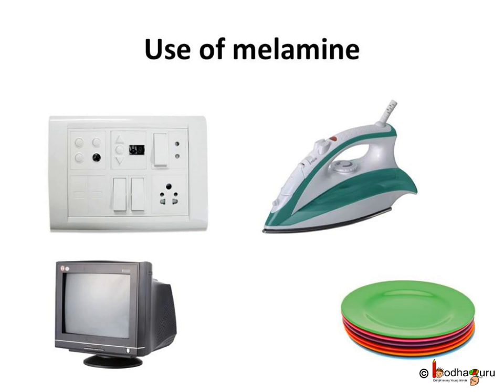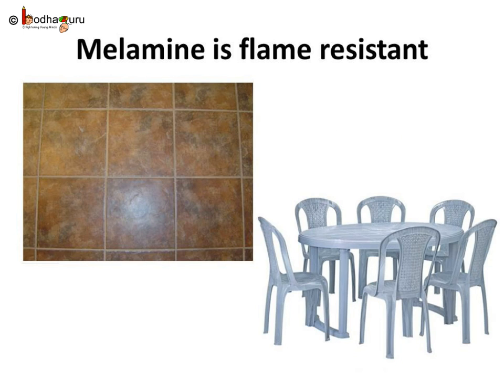Another example of thermosetting plastic is melamine. Body of electric appliances like iron, TV, radio, keyboard etc. are made of melamine. Melamine is also used to make utensils, dinnerware, containers etc. Melamine is flame resistant and can tolerate heat better than other plastics. Hence, it is used to make floors, furniture, fabric etc.